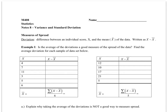In today's lesson, we are going to learn about variance and standard deviation. First of all, let's define what deviation means. Deviation is the difference between an individual score, which we will call x, and the mean, which we call x-bar, of our data. We will write this as x minus x-bar.